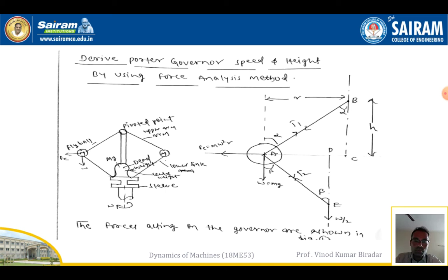When the engine speed increases, the rotation of the ball increases in the outward direction. During rotation, a force is generated outward — this is called the controlling force or centrifugal force, equal to mω²r, where m is the mass of the ball, ω is the angular speed, and r is the radius of rotation.